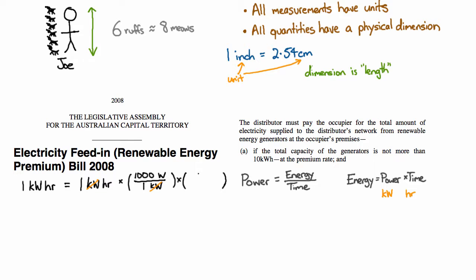But I'm going to go further and say I want to change the hours to seconds. So I know what one hour is. I'm going to put the hour on the bottom because I want it to cancel with the hour on the top over there. I know that's equal to 60 minutes. And so we can say that 60,000, and note that the hours cancel, watt minutes is equal to one kilowatt hour.